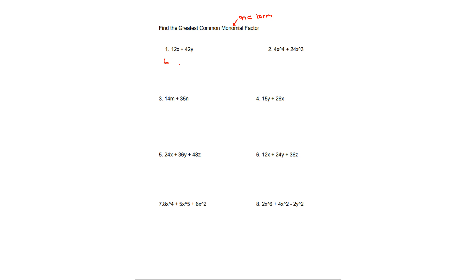How you get this is: you know that it can't include a variable, because we have x and y but they're separate, so a variable is not possible here. So you look at 12 and 42 — the greatest common factor between these is 6. So the greatest common monomial factor will be 6. And if you were to pull the 6 out, it would just be 2x plus 7y for number 1.